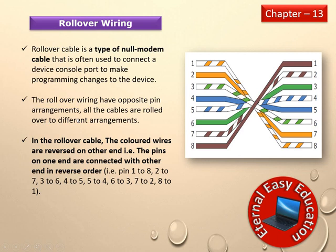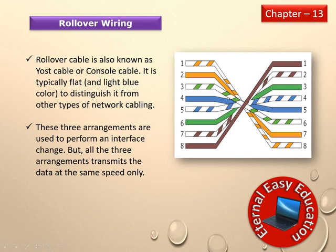Rollover wiring: the rollover cable is a type of null modem cable often used to connect to a device console to make programming changes. The rollover wiring has opposite pin arrangements — all the wires are rolled over to different positions. In the rollover cable, the colored wires are reversed: pin 1 connects to pin 8 and the order is fully reversed. Rollover cable is also known as a console cable or rolled cable, and is typically flat and light blue in color to distinguish it from other network cables.